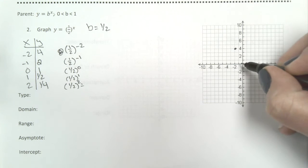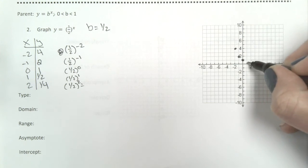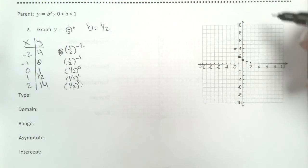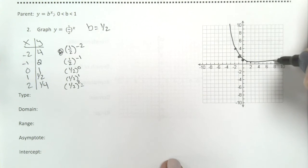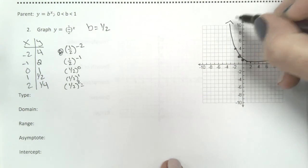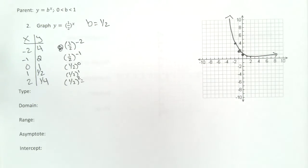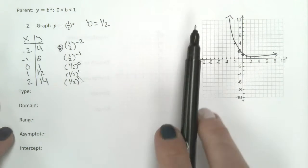Negative 2, 4, negative 1, 2, 0, 1, 1 half to a quarter. All right, so what type is this?